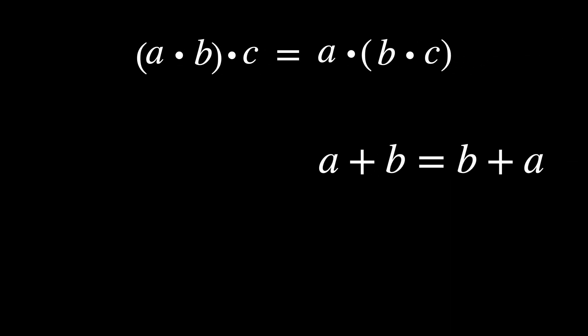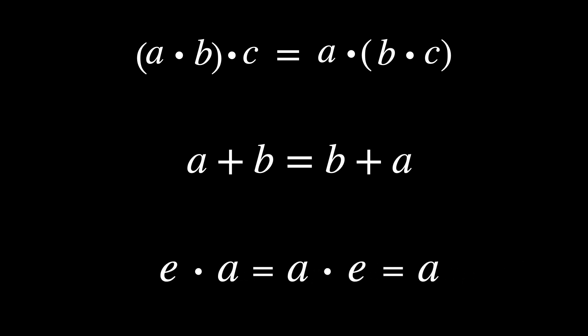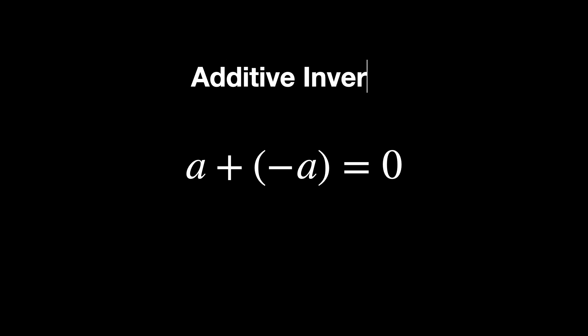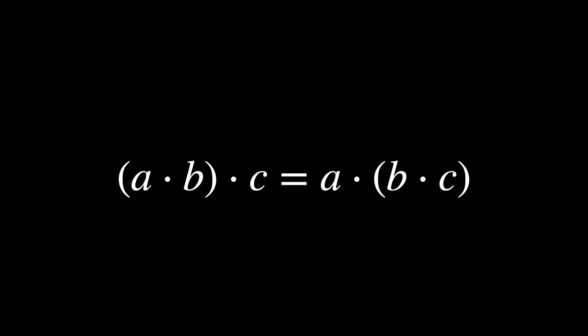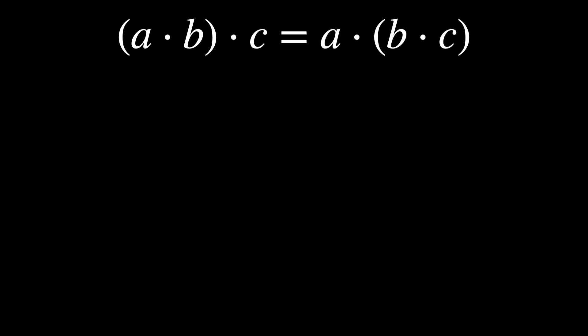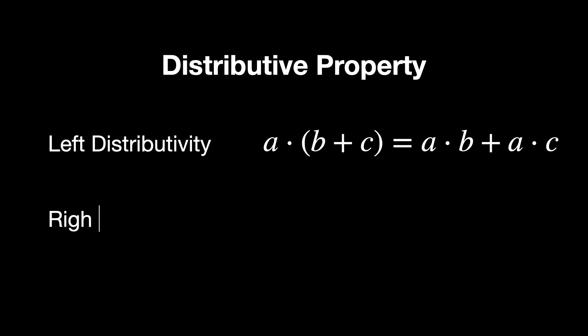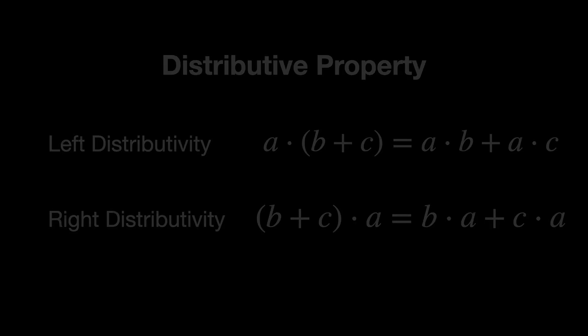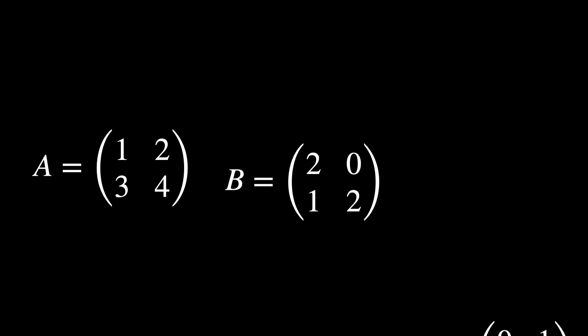Additive Abelian Group: Within a ring, the addition operation must form an abelian group. This means that addition is associative, commutative, has an identity element, and each element must have an additive inverse. Multiplicative Associativity: Multiplication in a ring doesn't need to be commutative, meaning that the elements can be multiplied in any order, but it must be associative. That means changing the groupings of multiplications doesn't change the outcome. Distributive Property: Multiplication must distribute over addition from both the left and the right, ensuring that operations like factoring and expansion work similar to how they do with regular numbers. Let's take a matrix example.